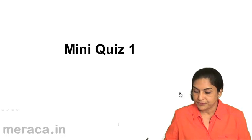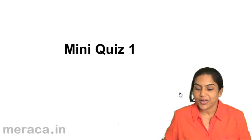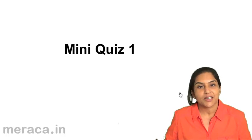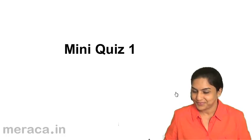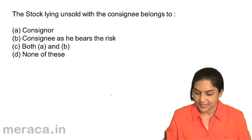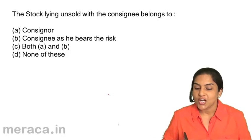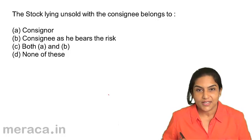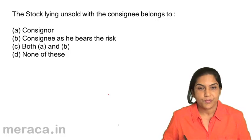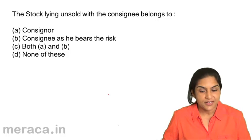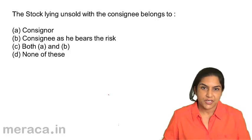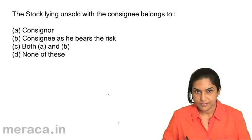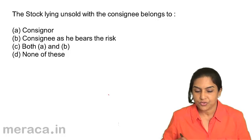Let us now take a short quiz to test our understanding of the concepts discussed so far. The stock lying unsold with the consignee belongs to: A. Consigner, B. Consignee as he bears the risk, C. Both A and D, D. None of these. I will give you a minute to just think it over.